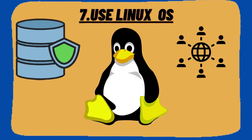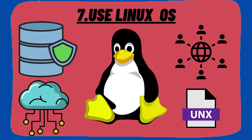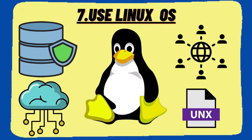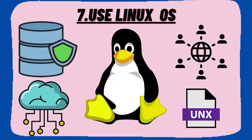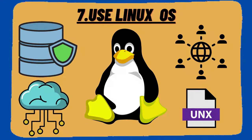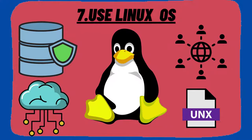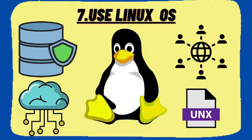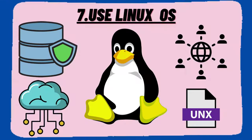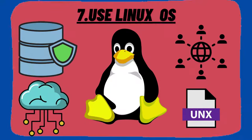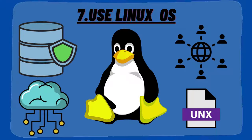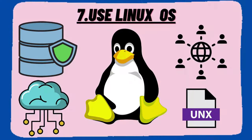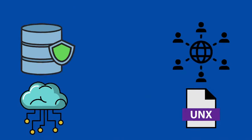The seventh important thing is to start using Linux OS. Gaining knowledge about Linux will help you learn networking, testing, embedded systems, database, cloud, Unix, and shell scripting. Shell scripts are very important and are used everywhere on a daily basis. Learning shell scripting will help improve your profile and play a major role in getting a job in the core sector.